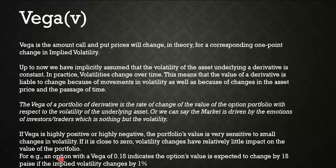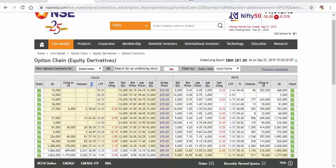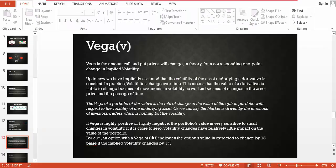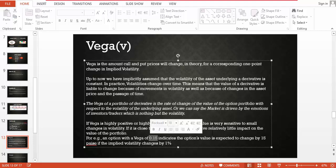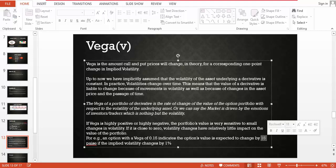For example, if the Vega is 0.15, the option price is expected to change by 15 paise. If the implied volatility changes by 1%, and if the Vega is at 0.15, the option premium is changed by 15 paise.